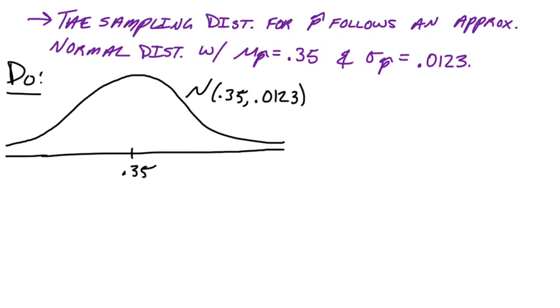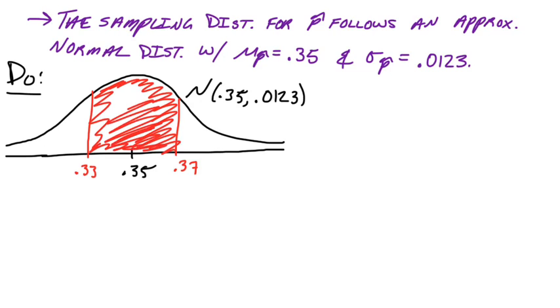And let's think about the interval we're interested in. We want to know within two percentage points. So keep in mind this curve is nice and symmetric. We want to go from 0.33 to 0.37. So if we want to represent that probability, we can shade everything between those two boundaries, from 0.33 to 0.37.